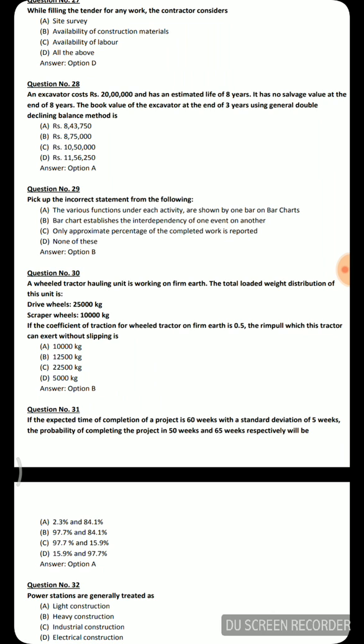Next question: An excavator costs 20 lakh and has an estimated life of eight years with no salvage value at the end of eight years. The book value of the excavator at the end of three years using the double declining balance method — applying the formula, the correct answer is option A: 8 lakh 43,750.